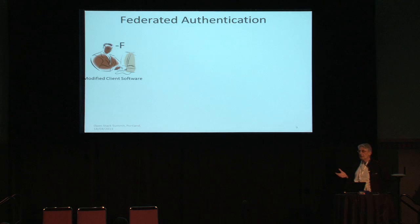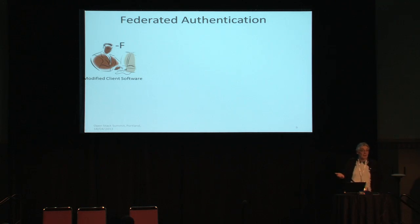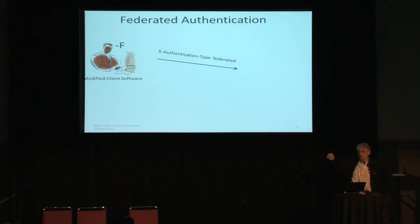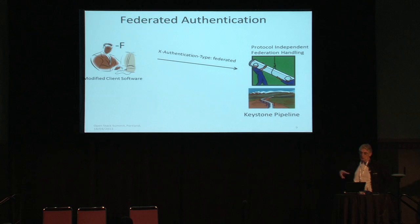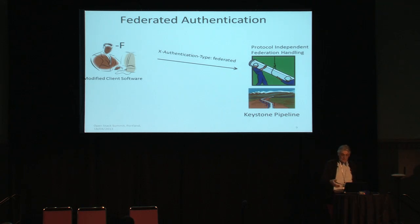From the user perspective, client software must be modified to handle federation. We've modified Swift and a couple of others, adding a -F flag on the command line to indicate federated login. This causes a new header — X-Authentication-Type: Federated — to be added to the message sent from client to API. We've also inserted a new module into the Keystone pipeline; when this module sees the federated header, it grabs the message, does the processing, and returns a response to the user.